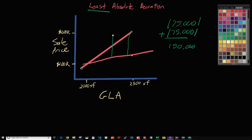Then we draw the next line, calculate the residuals, take the absolute value, add them up, get our number. Then we do it from this point to this point, and then this point to this point, and so on, until we've done it with every potential pair — just like you would with Theil-Sen. In the end, we pick the number that is the lowest.